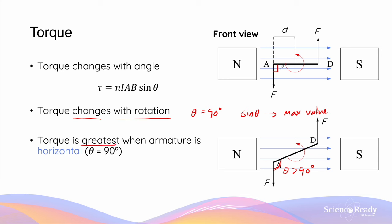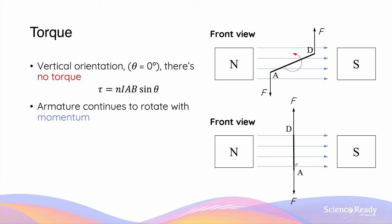When the armature continues to rotate from the horizontal position, the torque will decrease from its maximum value. When the armature reaches its vertical orientation, the torque acting on the armature becomes zero. However, the armature will continue to rotate with momentum.